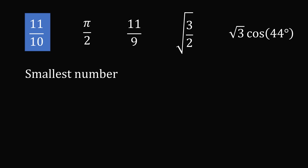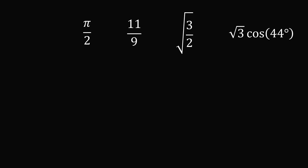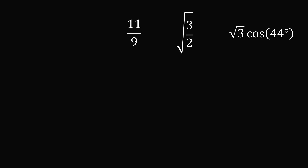We have figured out the smallest number, so let's remove it and find the next smallest of the remaining four. It would seem to be 11 over 9. Comparing to pi over 2: pi over 2 is approximately 3.14 over 2, which is about 1.57, whereas 11 over 9 is approximately 1.22 — so pi over 2 is significantly larger and cannot be the next smallest. From the earlier calculation, the square root of 3 times cosine of 44 degrees was larger than the square root of 3 over 2, so that option cannot be the next smallest either.